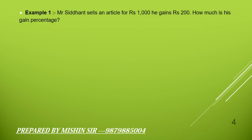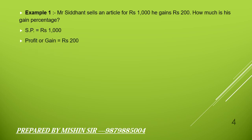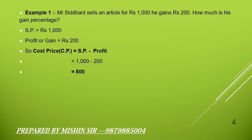Mr. Sidant sells an article for rupees 1000 and gains rupees 200. How much is his gain percentage? We write the data: Selling price = ₹1000, Profit = ₹200. So Cost price = Selling price minus Profit = 1000 minus 200 = ₹800.